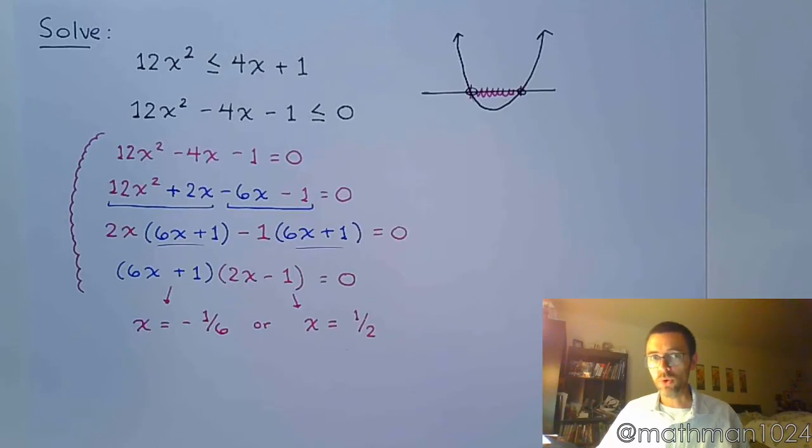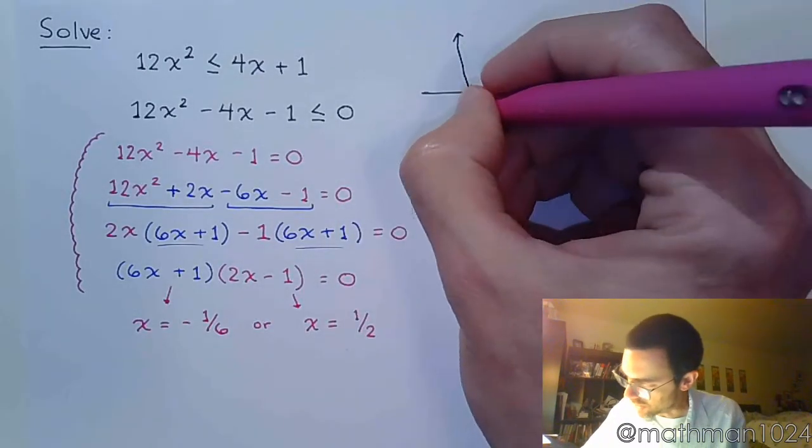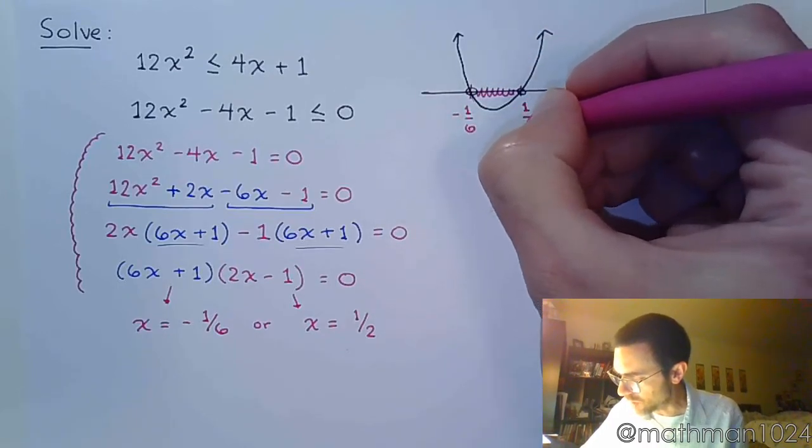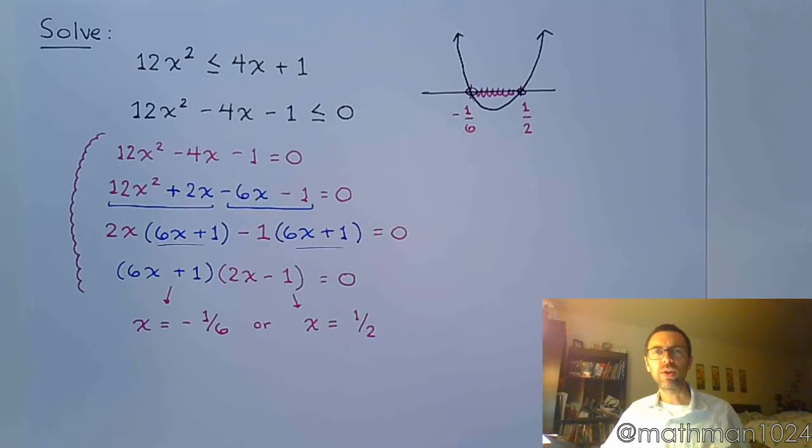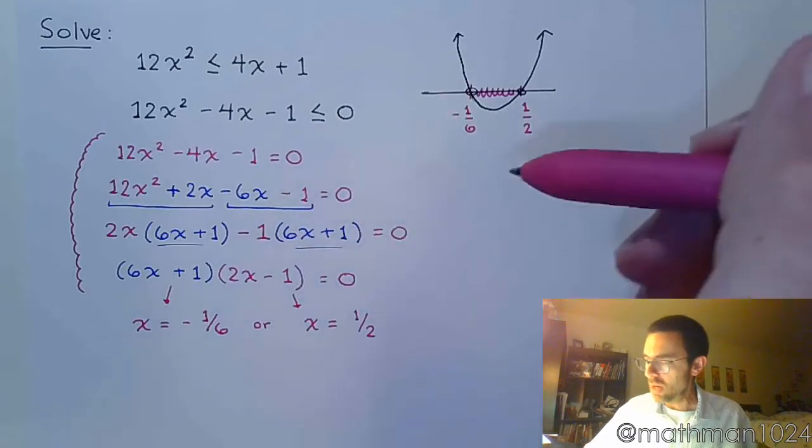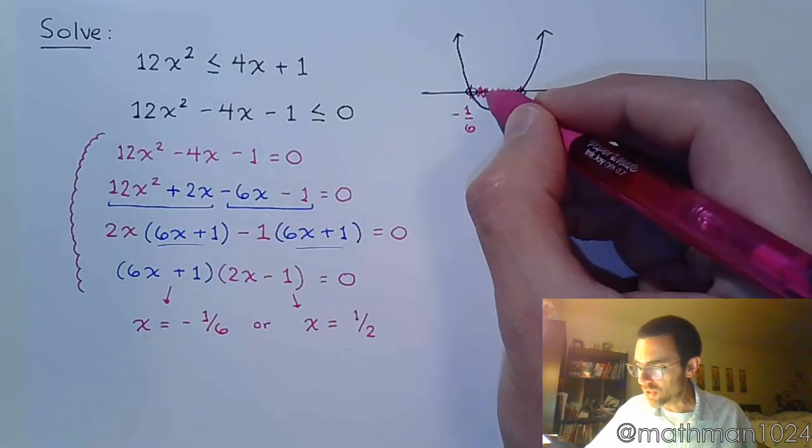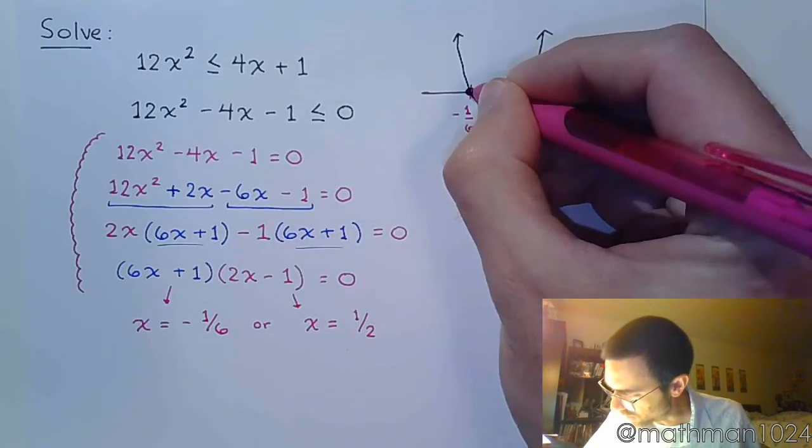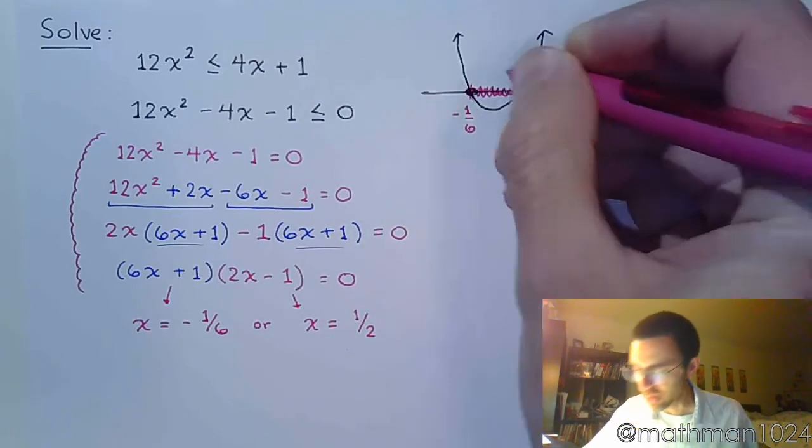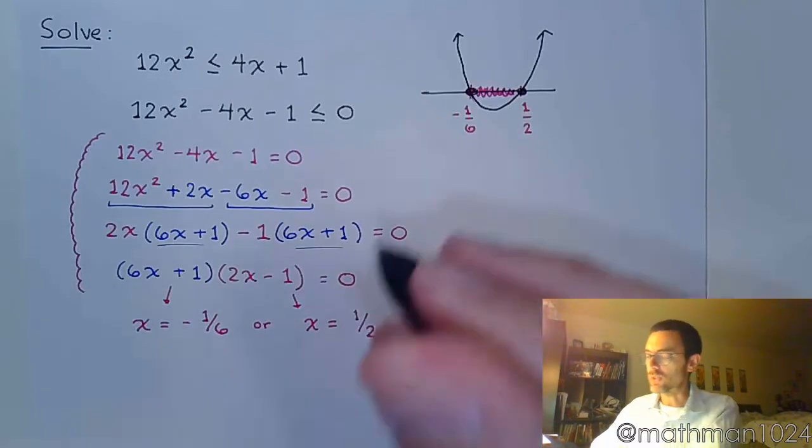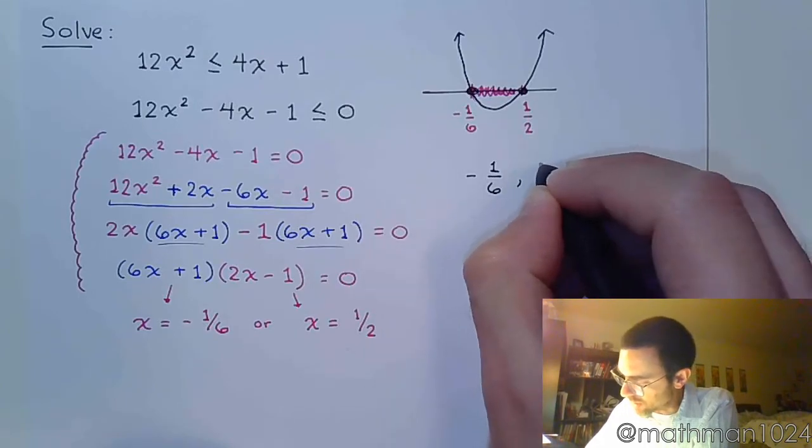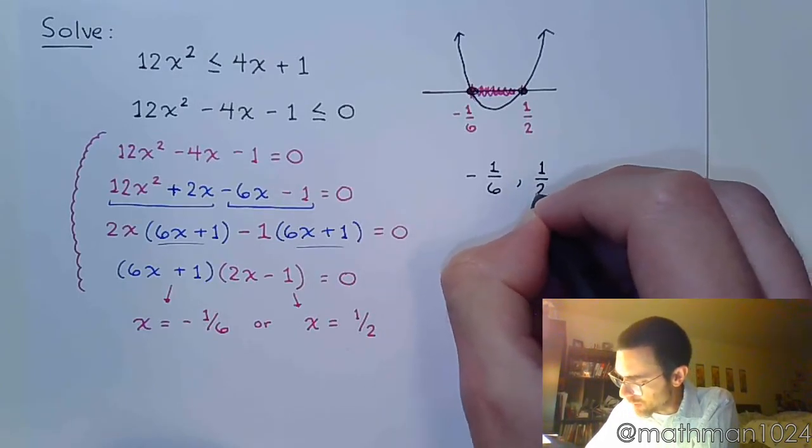So as long as we have these guys in the right order, we can say that this is negative 1 over 6 and this critical value is 1 half. And knowing that we're supposed to be looking for that region that is below the x-axis because this says less than or equal to, we're looking for this shaded region in between.